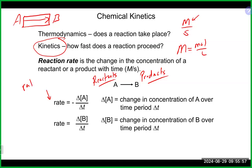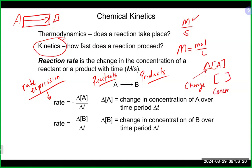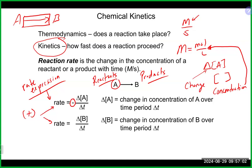That idea of increasing products and decreasing reactants is important when we write the rate expression. The rate is equal to minus delta [A] over delta t. The delta symbol means change, and the brackets mean concentration — usually molarity. The rate equals minus the change in concentration of A over the change in time. A is our reactant, so we need the negative sign because when we calculate the rate, the numbers should be positive.